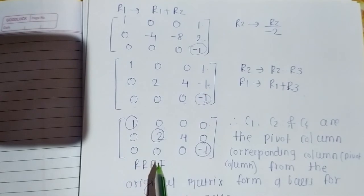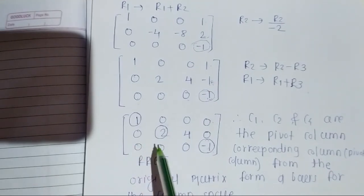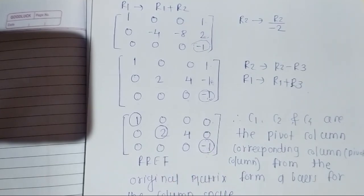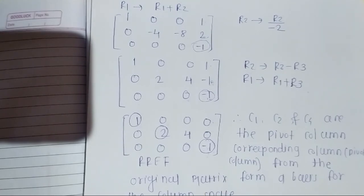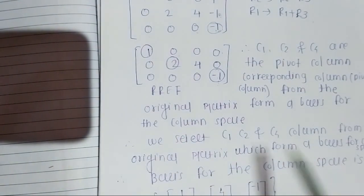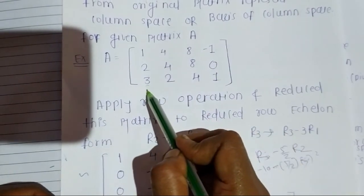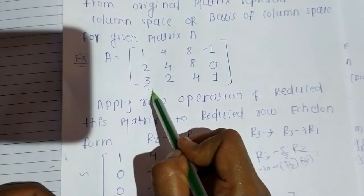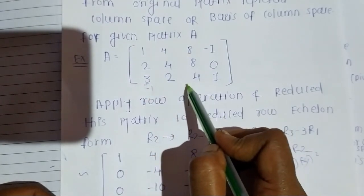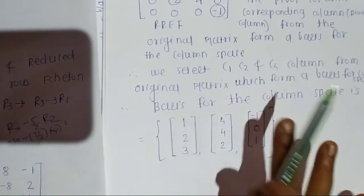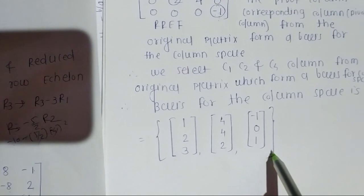Once we identify the pivot columns from RREF, the corresponding columns from the original matrix represent the basis for the column space. Here, the pivot columns are C1, C2, and C4. So we select columns C1, C2, and C4 from the original matrix, and these three columns form a basis for the column space.